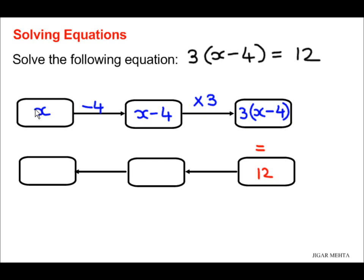The opposite of multiply by 3 is divide by 3, so 12 divided by 3 gives me 4. So I know that x minus 4 equals 4 now.